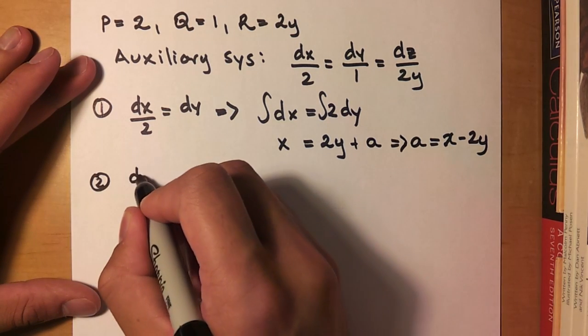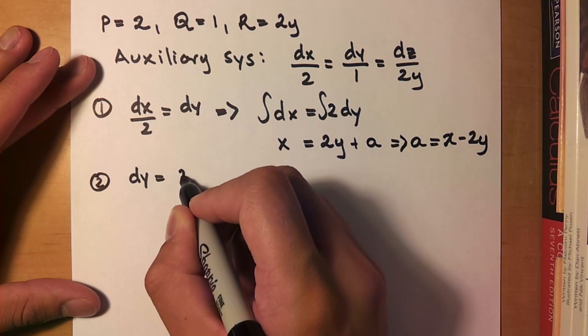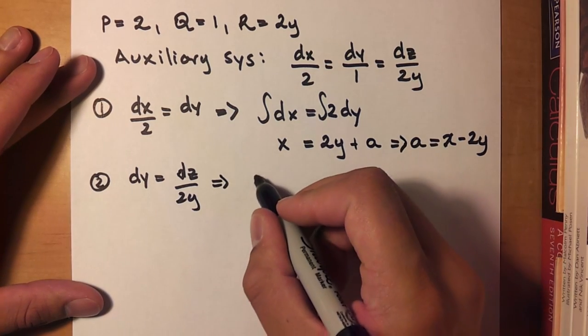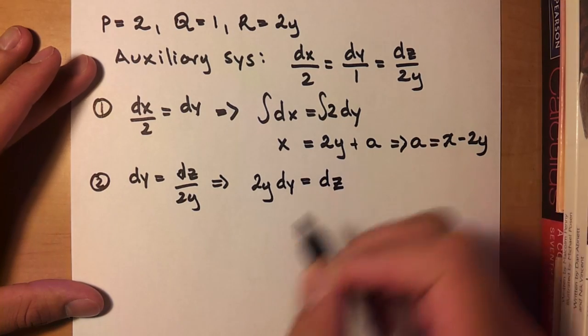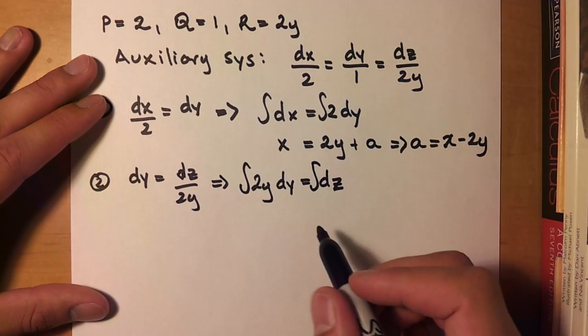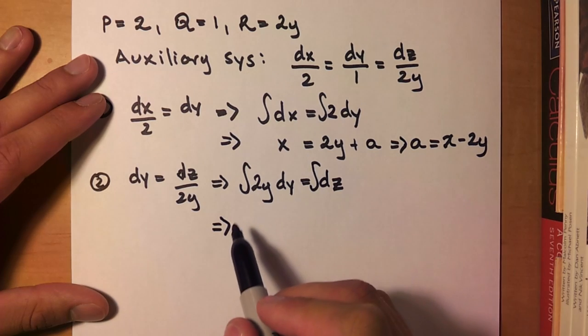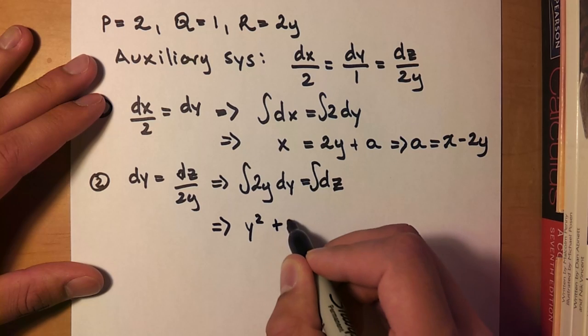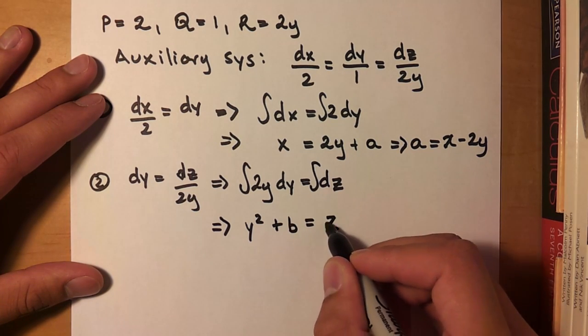So I'll be dy. dy is equal to dz over 2y. Simplify that out. So we'll get 2y dy is equal to dz. Alright, let me integrate both sides.